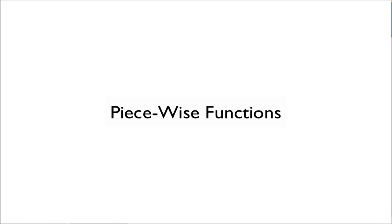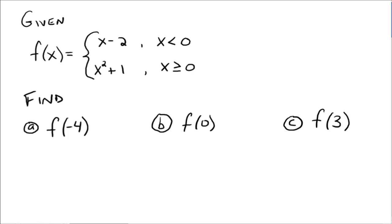All right, so now we have piecewise functions, and just like it sounds, our functions are going to be in pieces. For example, f of x is defined as x minus 2 when x is less than 0, and f of x is defined to be x squared plus 1 when x is greater than or equal to 0.